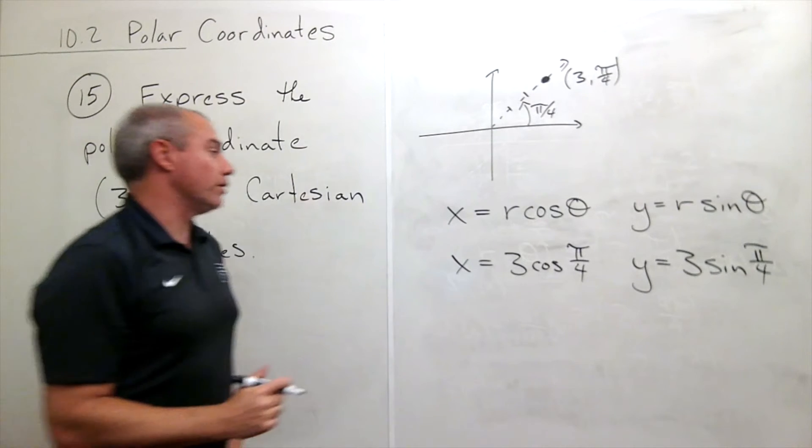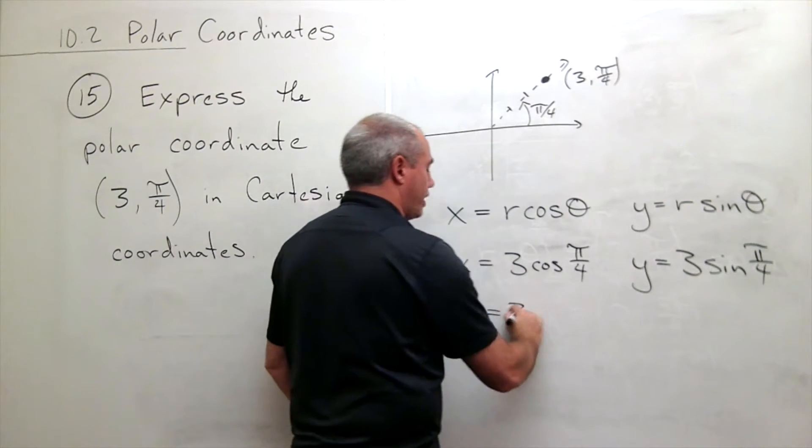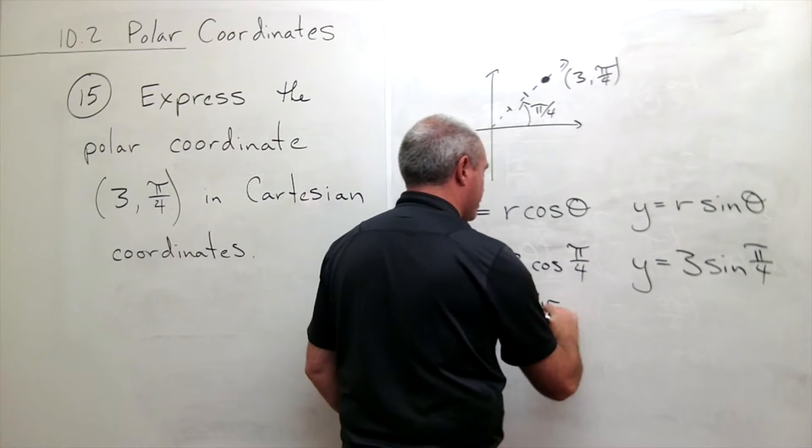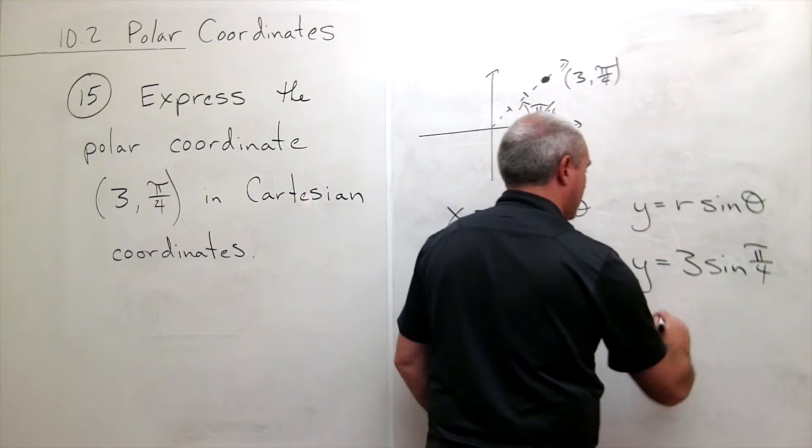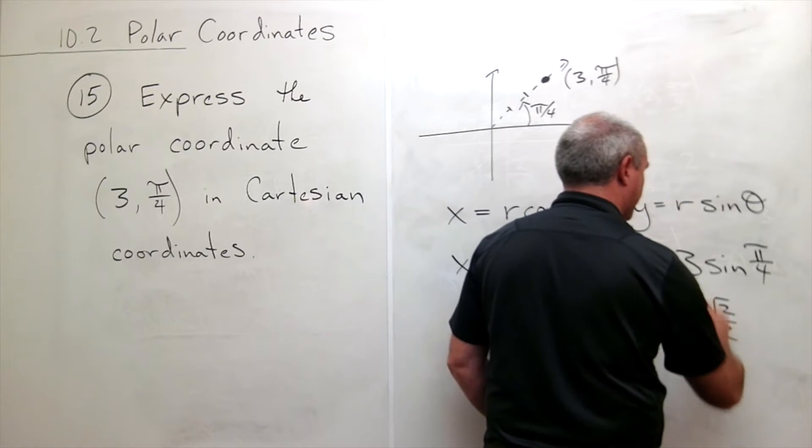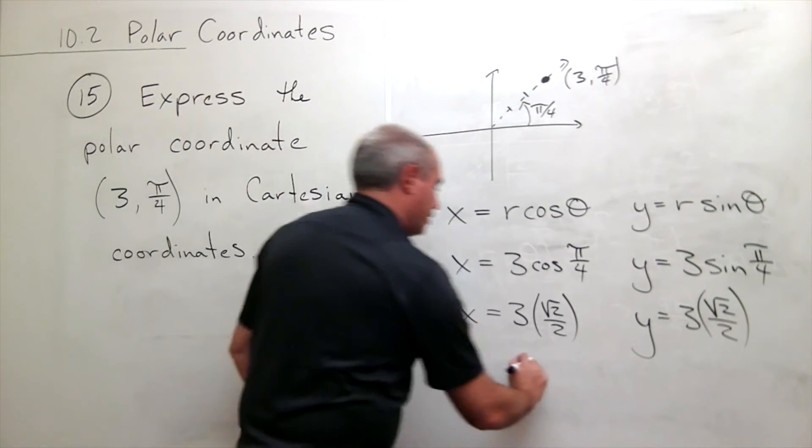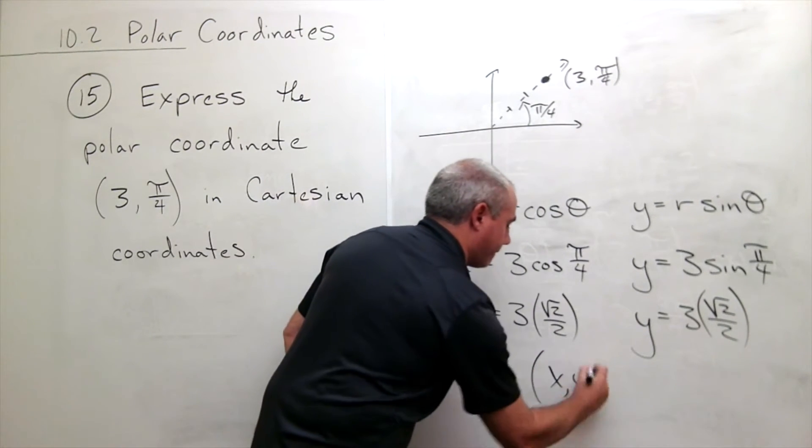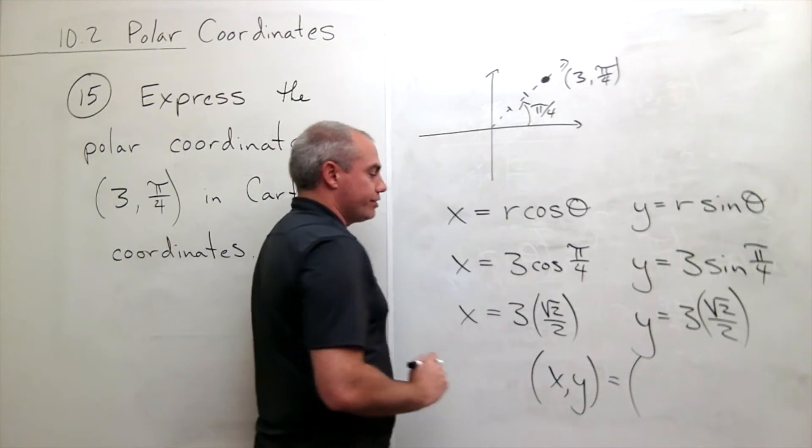All right, so now we just compute this and we get that x is equal to 3 times the cosine of π/4, which is √2/2. And over here, sine of π/4 is also √2/2. So we end up with the polar coordinate (x, y) which is equal to—well, x in this case is 3√2/2.